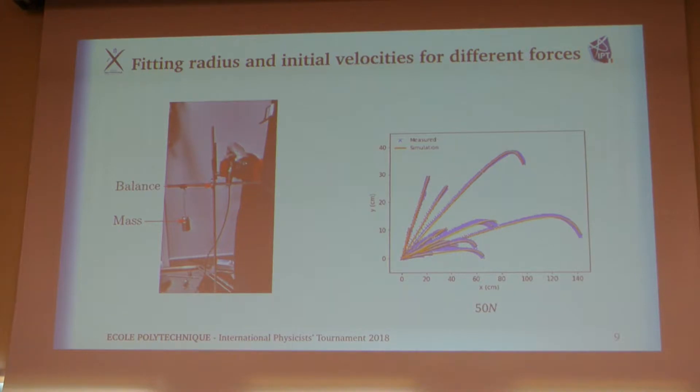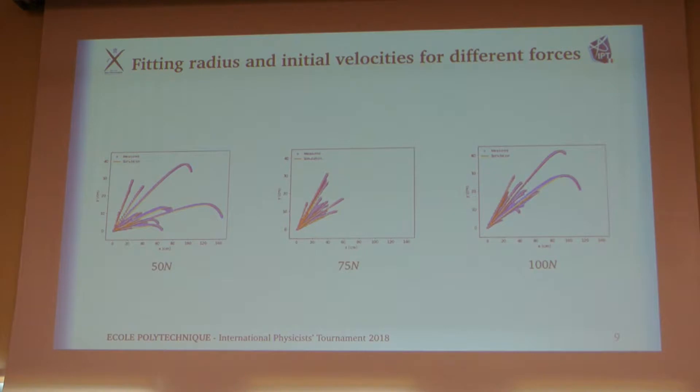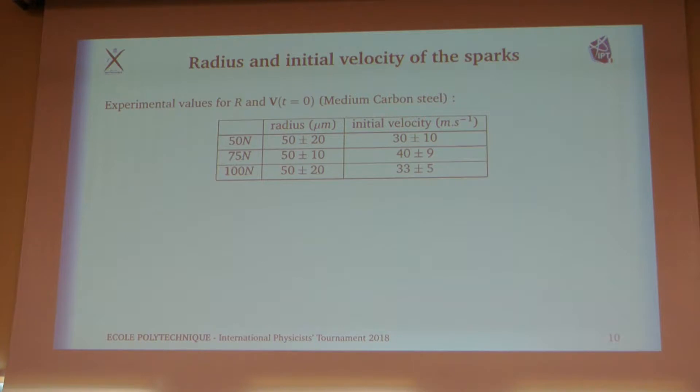We did this. Here you can see on the right that in blue we measured the trajectory of sparks. This is a spatial plot. Each point at a given time is the position of sparks. In orange, this is fitting that we did by varying the radius and initial velocity. We did this experiment for different forces applied on the grinder in order to assess the importance of this parameter. We did it simply by using a kind of balance and mass to put a constant force on the grinder. We did it for different forces, and as a result, there is this table. We can see that the radius of sparks don't really depend on the force we applied. We are always around 50 micrometers. Also, the initial velocity is quite constant. In fact, it's approximately a little bit less than the tangential speed on the angle grinder, which is quite convincing. These values will be used thereafter as orders of magnitude for these two parameters.